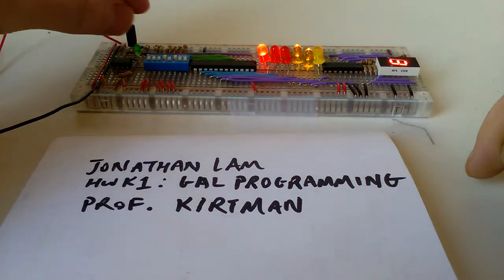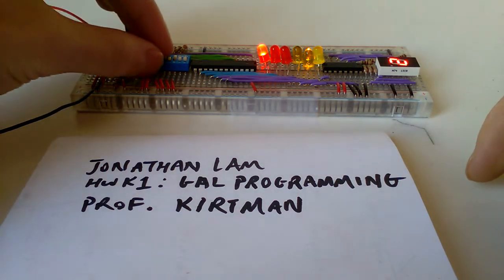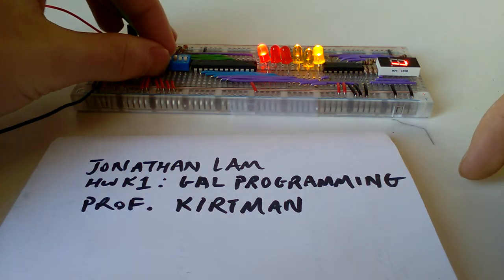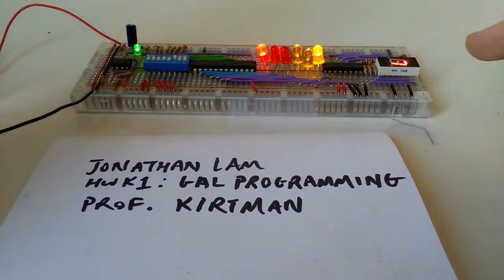If I set enable to 0, then it should stop counting. It'll get stuck at 7 here.